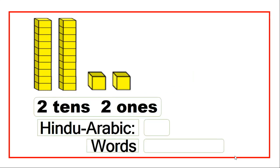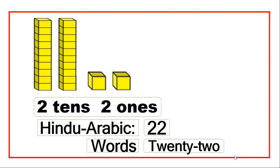If we have two blocks of tens and two blocks of ones, then we have two tens and two ones. In Hindu Arabic, we write this as two, two. In words, we write it as twenty-two.